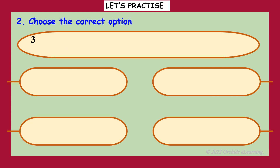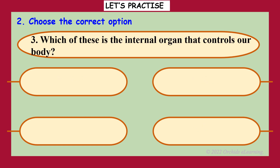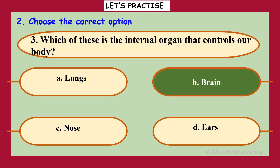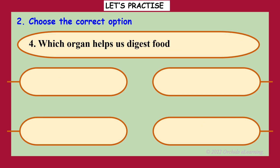Which of these is the internal organ that controls our body? Read the options. Answer: B — brain. Which organ helps us digest food?